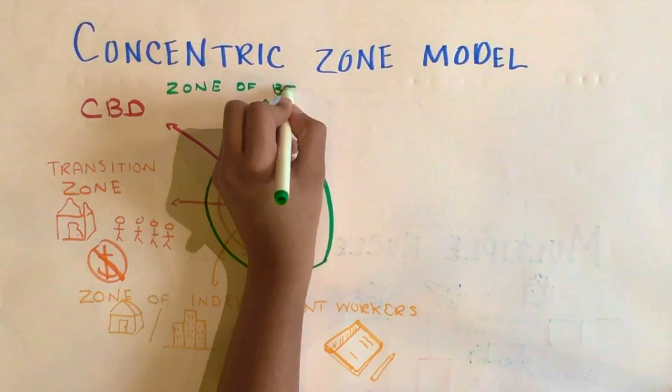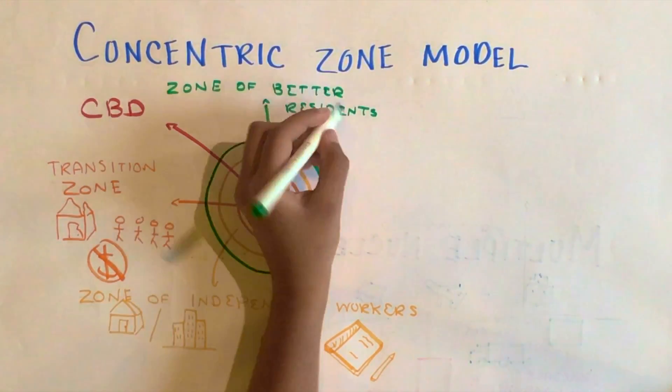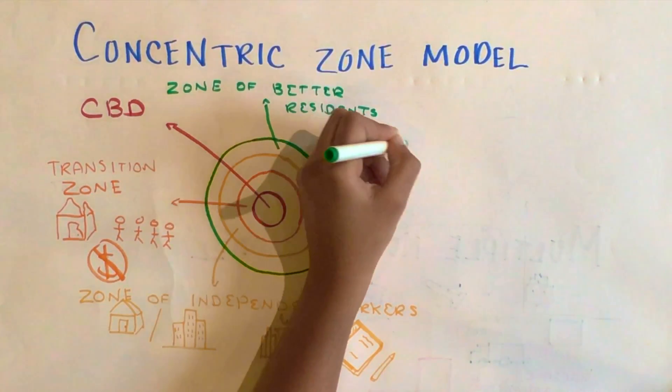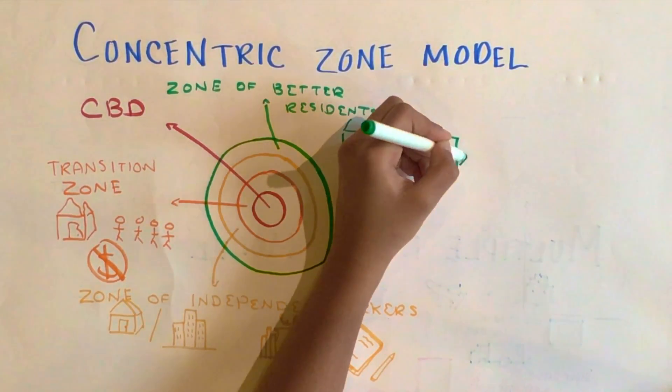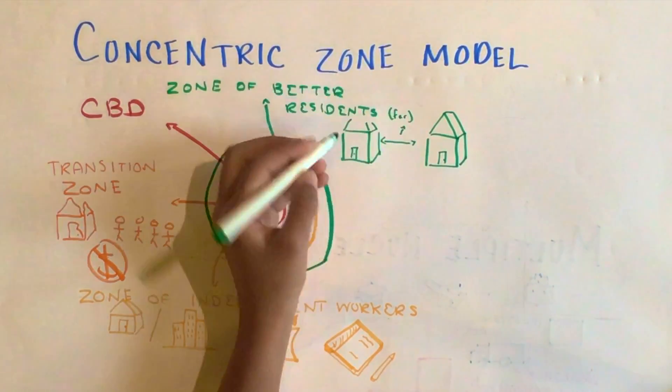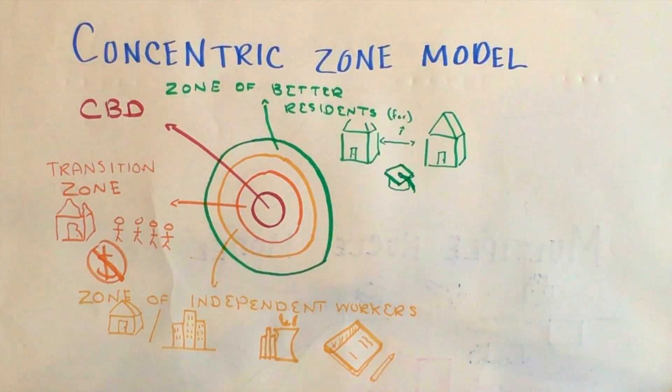After that zone, we will find the zone of better residents. In here is newer and more spacious homes, because middle-class families usually live here. Higher education can be achieved. Tertiary jobs can be found here, and there is also a higher standard of living among these communities.